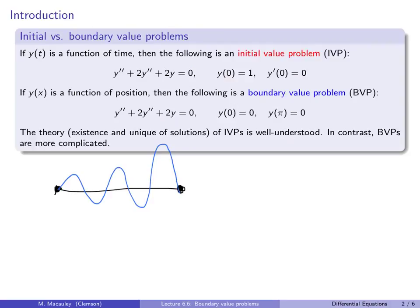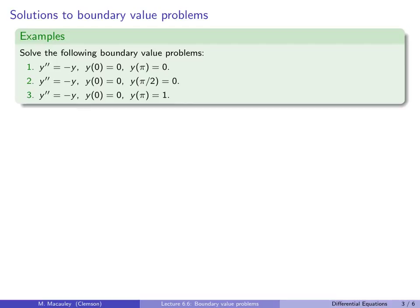Here's a good example of how unpredictable solutions to boundary value problems can be. Here are three BVPs that are very similar — they only differ on the right boundary. Let's solve the general solution first, because it's the same for all of them.